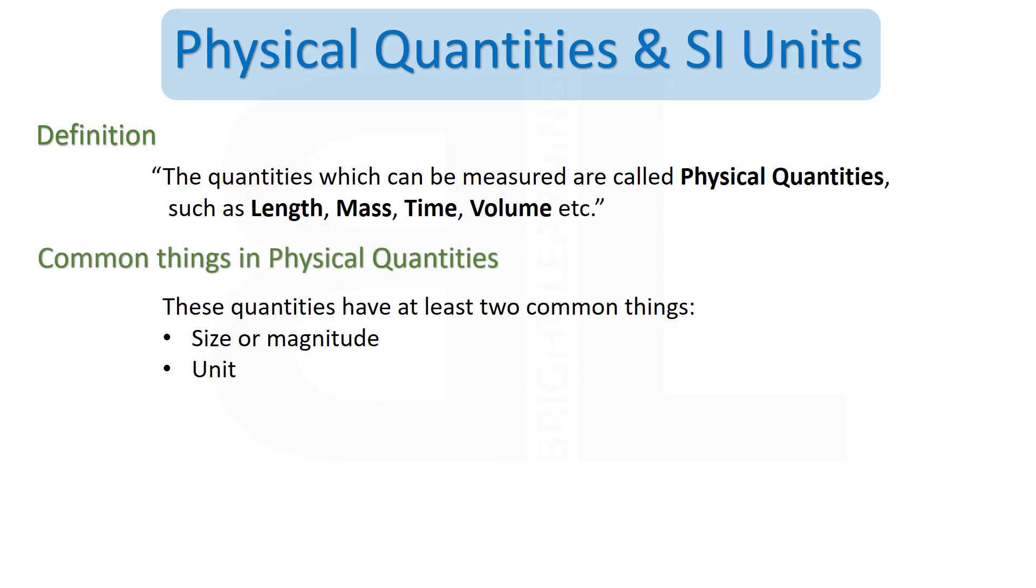A quantity is considered to be a physical quantity if it possesses the following attributes: one is size or magnitude and second is the unit in which a quantity will be measured.